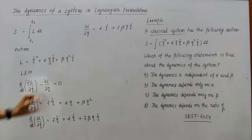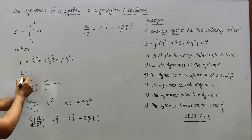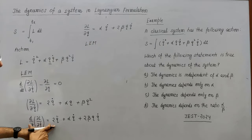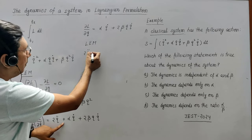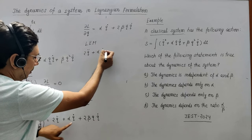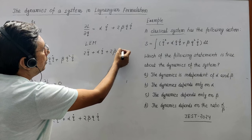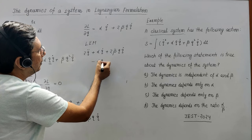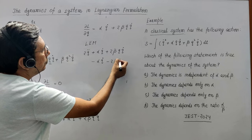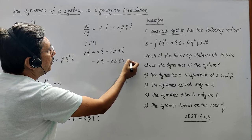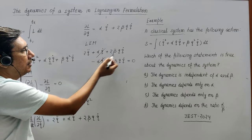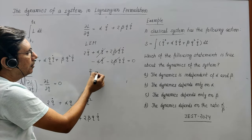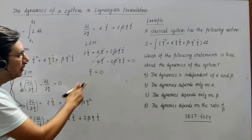Now substitute these two terms into Lagrange's equation of motion. The equation of motion becomes: 2q̈ + αq̇ + 2βqq̇ − αq̇ − 2βqq̇ = 0. The αq̇ terms cancel out and the 2βqq̇ terms cancel out, so this gives us simply q̈ = 0.